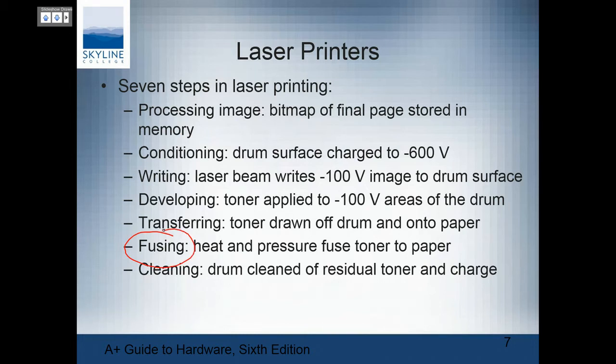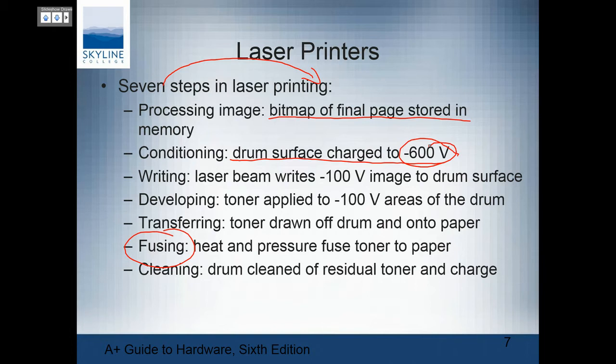You may also see letters pop off the page — it means it's the wrong kind of paper. The paper is too smooth and the toner isn't adhering properly. When you get into laser printers, you really need to use the correct paper — the correct weight and thickness. Processing the image creates a bitmap of the page stored in memory. Conditioning: the drum surface is charged to minus 600 volts. That tells you that you really don't want to be casual about working on a printer.